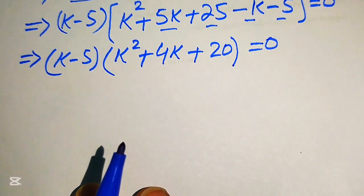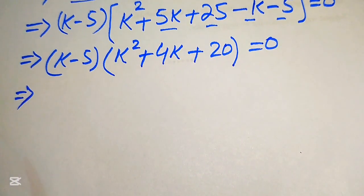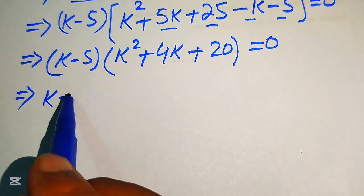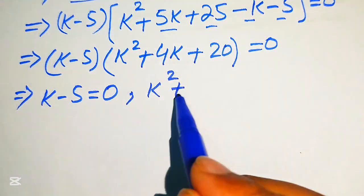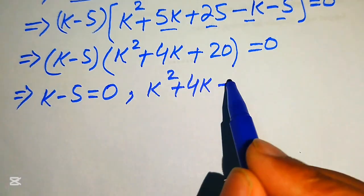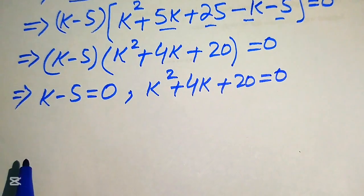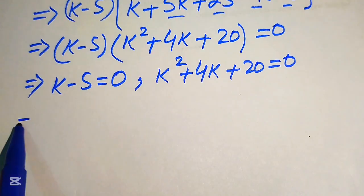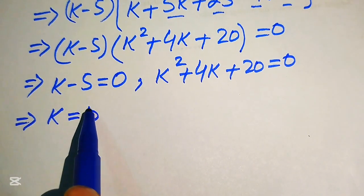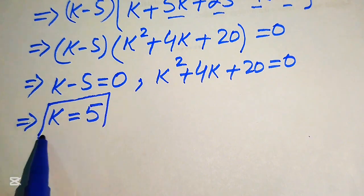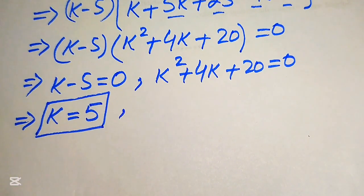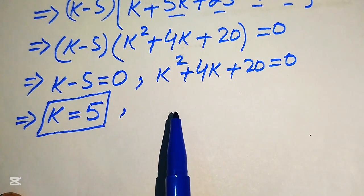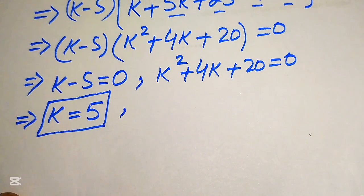We split into two cases. Case 1: k - 5 = 0, giving k = 5, which is our first real root. Case 2: k² + 4k + 20 = 0, which we solve using the quadratic formula to find the other roots.